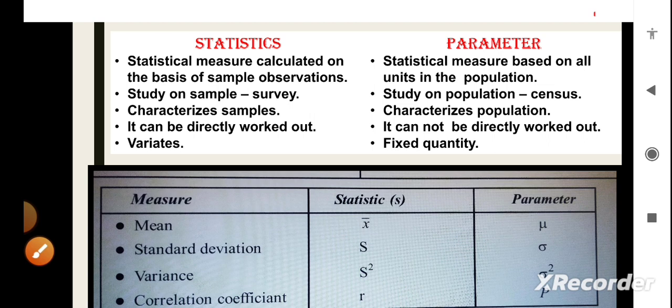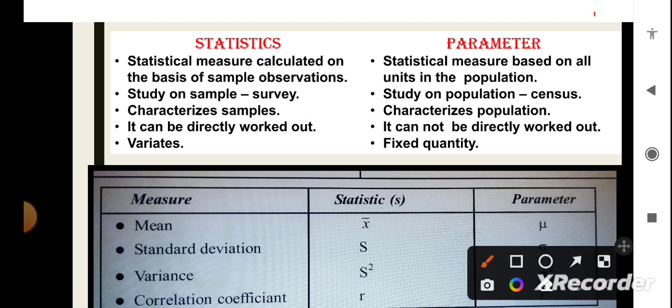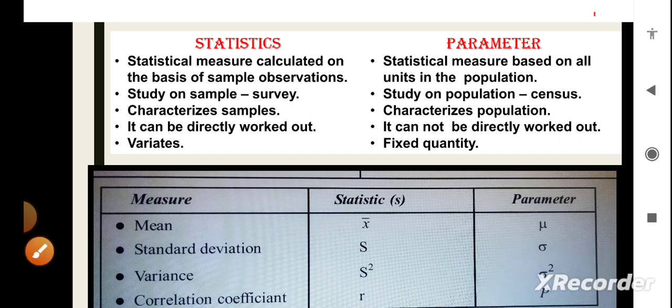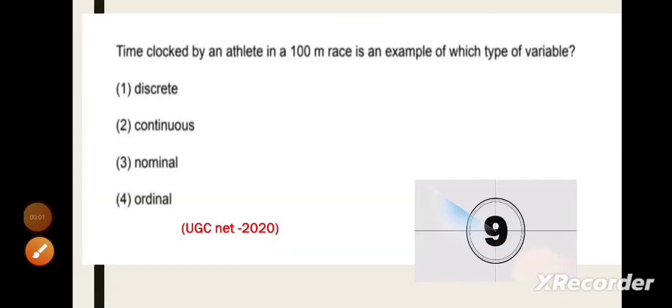Here you can see that the statistics and parameters are represented by different letters. For statistics, we use Latin letters, whereas for parameters, we use Greek letters. Now, let's solve some questions to get to know what we have learnt today.